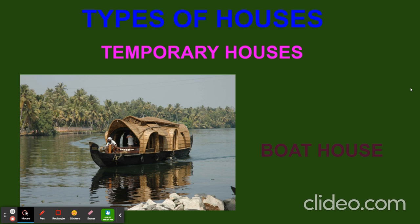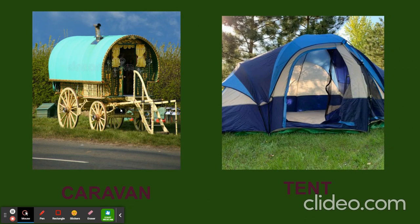Some people need to move around a lot. They take their house around with them — these are also called temporary houses. These people move from one place to another place, so they also take their house along with them. One of the houses which is temporary is a boat house. The next one is a caravan. And the other one is a tent. Tent is also used for picnic purposes. When we go on a picnic, we build these tents, and once we are back, we take them along with us.